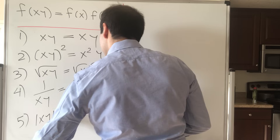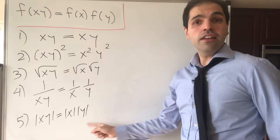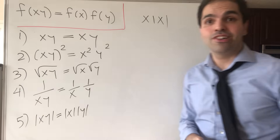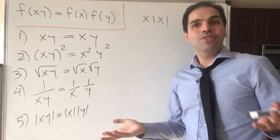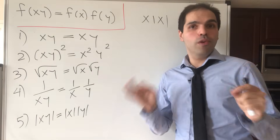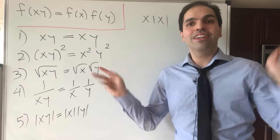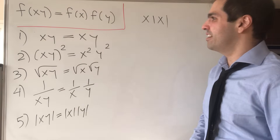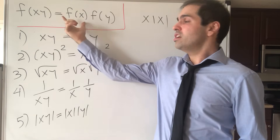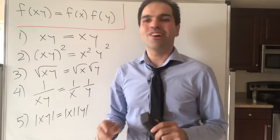Because the absolute value of xy equals the absolute value of x times the absolute value of y. And there are even crazier functions — you can check that x times the absolute value of x also works. What we would like to find is the most general formula. In this video, we'll restrict ourselves to continuous functions, because for discontinuous ones there are some crazy counterexamples. The cool thing is we will just transform this identity into another one that we already know.